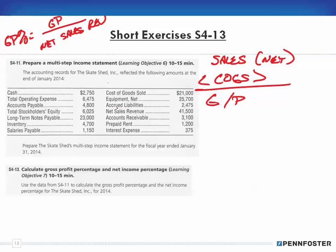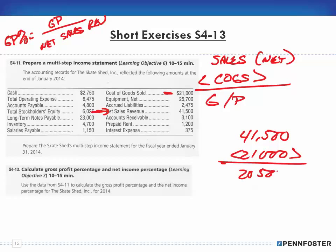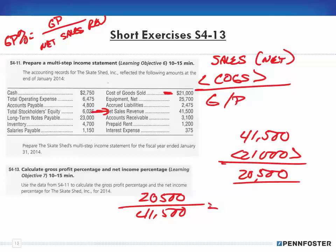In this case, we have a net sales revenue of $41,500 and a cost of goods sold of $21,000. Subtracting those gives us a gross profit of $20,500. Now plugging into the formula: $20,500 divided by $41,500 gives us a gross profit percentage of 49.4%.